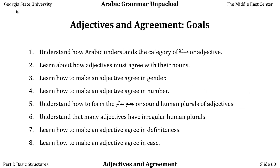Again, in this lesson we have mastered how Arabic understands the category of siffa, or adjective. We've learned how adjectives must agree with nouns in gender, number, definiteness, and case. We've understood how to form the sound human plurals of adjectives, and we've become aware of the existence of irregular human plurals. This is a lot to digest. Download the drills that go along with this lesson and try to do them at home — answer keys are also available. Practice makes perfect.